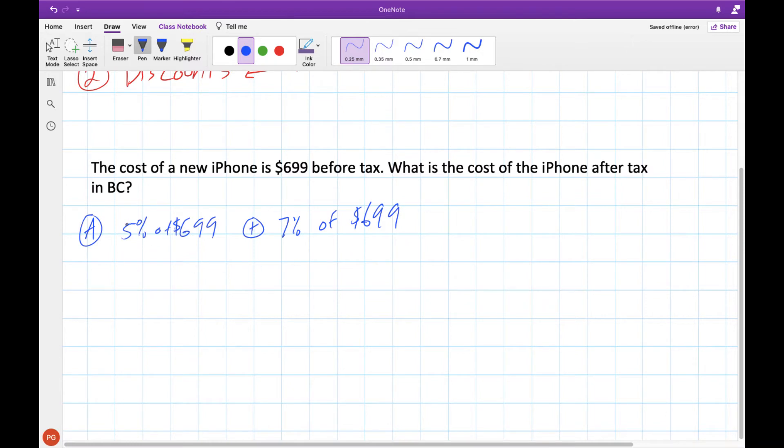The first way is that we would figure out the GST, that's the government sales tax from the federal government of all Canada, and figure out how much that is of our $699, and then we do the same thing for the PST. Once we figure out those two amounts, we add them together and then add it to the total cost. As we know, 5% of a number is the same as this times this, but we need to turn our percentage into a decimal. Once we do that, we can plug it into our calculator, and then we can do the same thing on the other side.